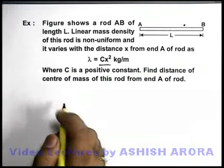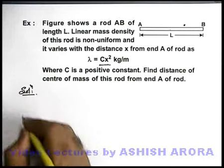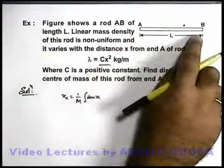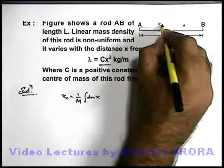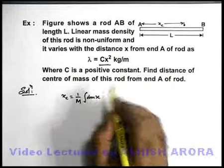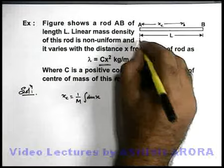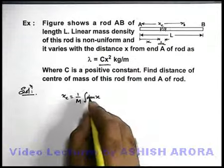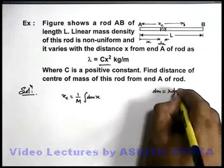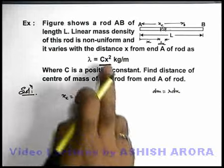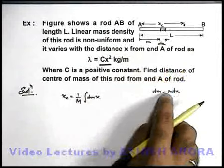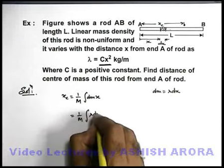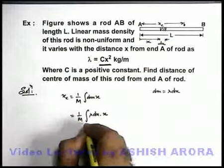We are required to find the position of center of mass, say x_c. We can directly write: x_c = (1/M) ∫ x dm. We consider an element at distance x from end A of width dx. The mass of this element dm = λ dx, since λ is the linear mass density — mass per unit length. So for length dx the mass is λ dx. Substituting: x_c = (1/M) ∫ λ x dx with limits from 0 to L. Substituting λ = cx², this becomes (1/M) ∫ cx³ dx from 0 to L.